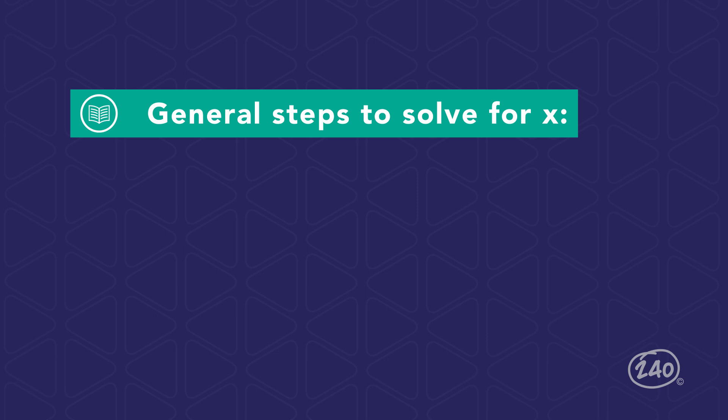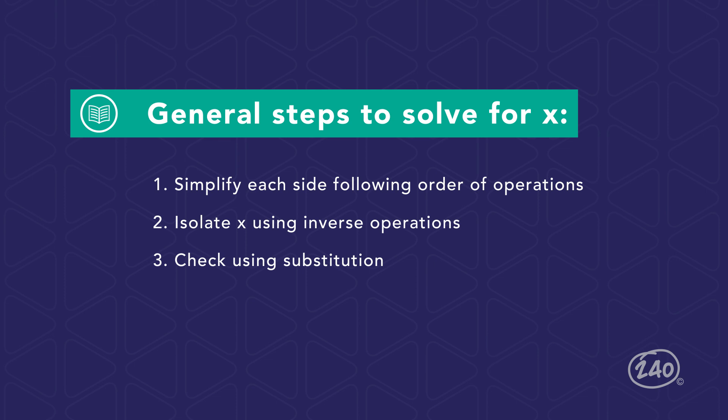There are three general steps to solve for x. First, simplify each side of the equation following the order of operations, PEMDAS. Next, isolate x using inverse operations. This means you will undo the operations. And finally, once you get x, check using substitution.